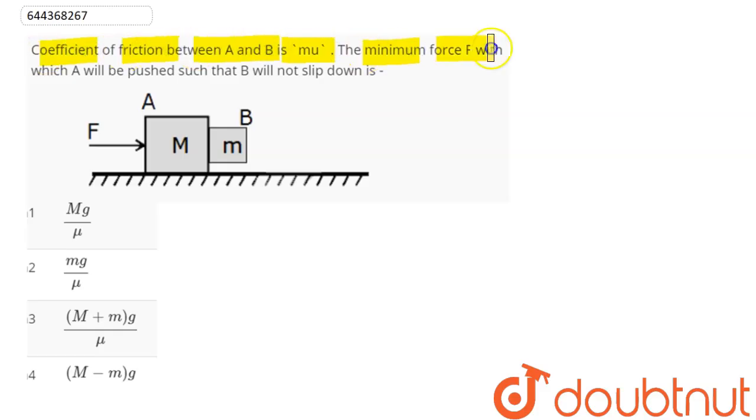A and B is μ. The minimum force F with which A will be pushed such that B will not slip down is? So here we can say, suppose A and B considered as a system, so the whole mass of this system shall be capital M plus small m.